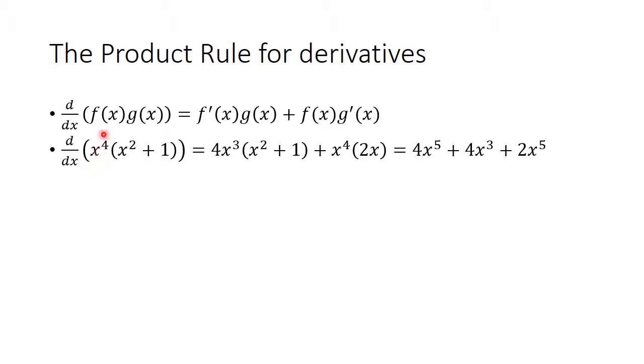You could take the derivative of this, which we placed here, 4x cubed, and then just copy this one there. And then do it in the other direction. Take the derivative of this one, which is just 2x, you'll put that there, and copy this one here. And then multiply it together and you'll get this. Notice, you can add these two terms together and get 6x to the 5th also.